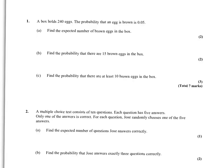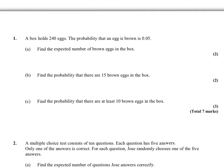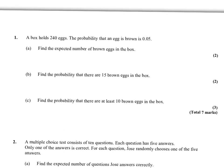Looking at this example, the first question asks for the expected number of brown eggs. The expected value E(X) for binomial distribution is always N times P — the number of trials times the probability of success. In this situation, there are 240 eggs, so N equals 240, and the probability that an egg is brown is 0.05. So the expected number of brown eggs is 240 times 0.05, which equals 12.